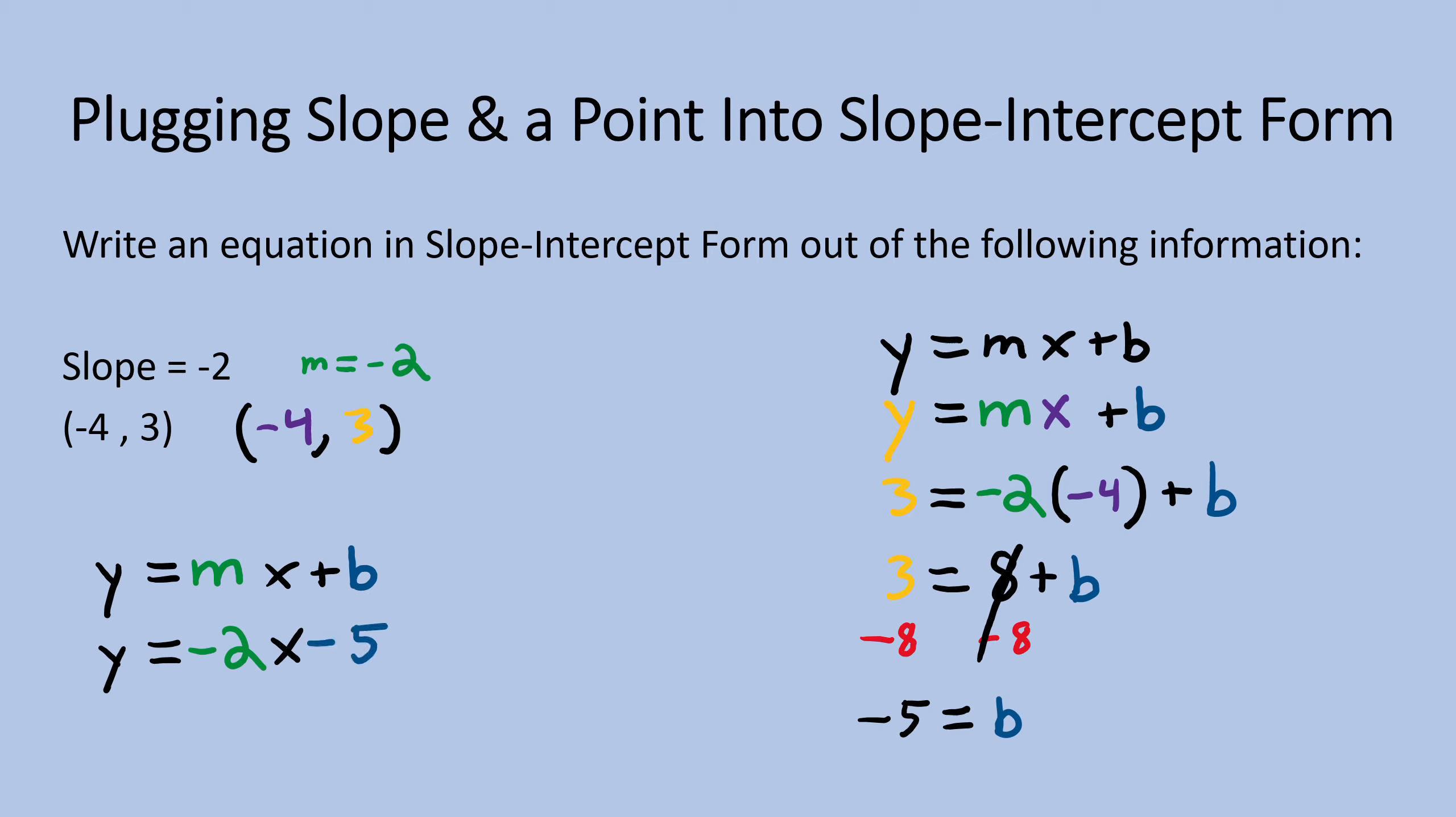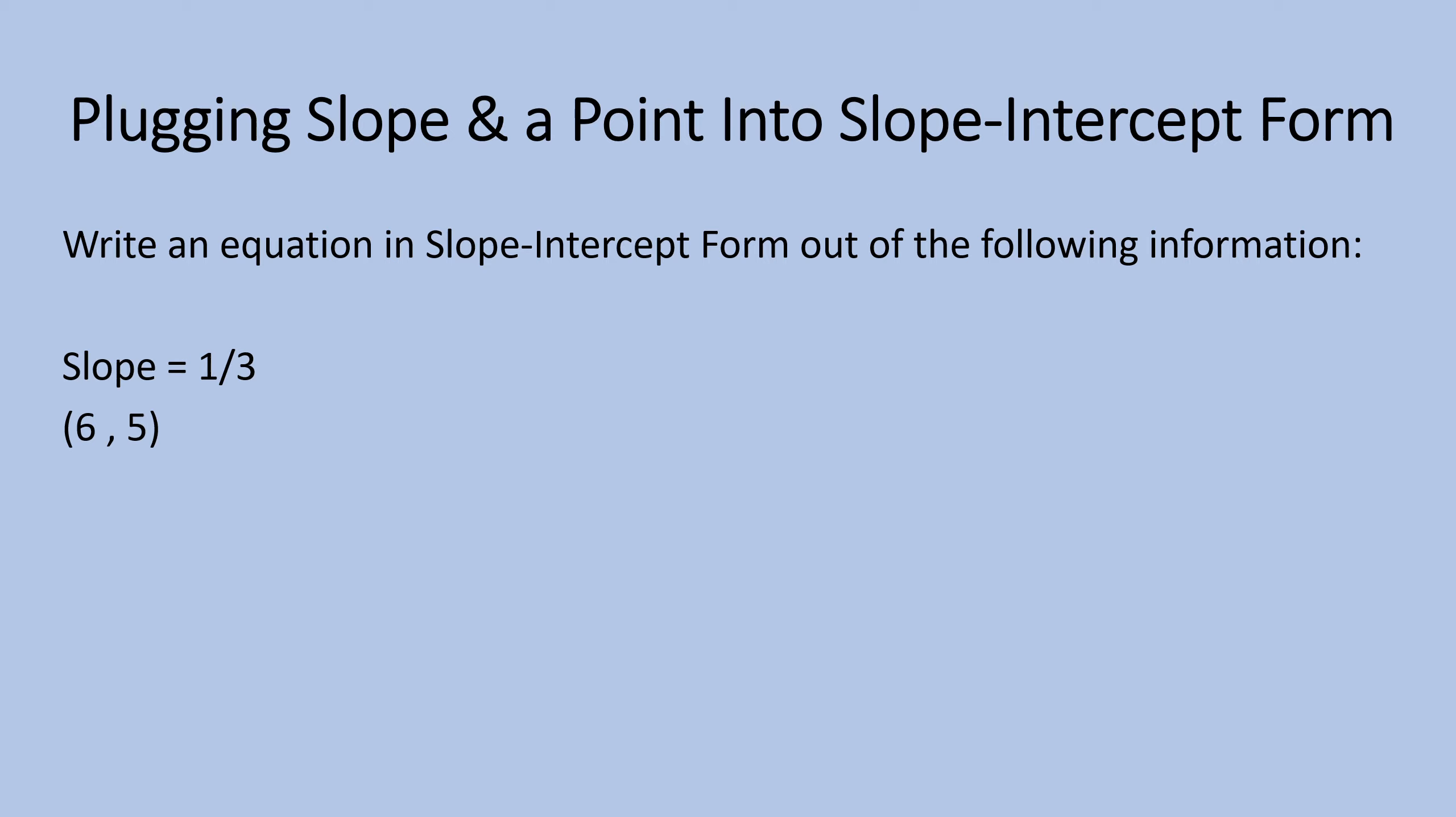Here, just like in our last problem, we've only been given a slope and a point from which to write the equation of a line in slope-intercept form. Let's start by writing out our formula and then let's color code it.